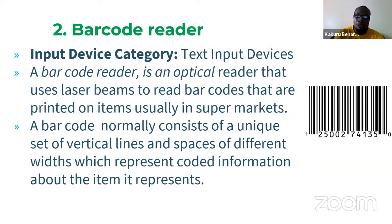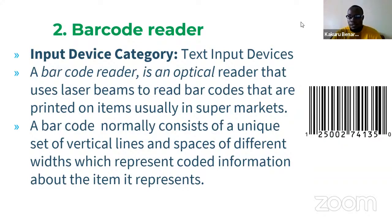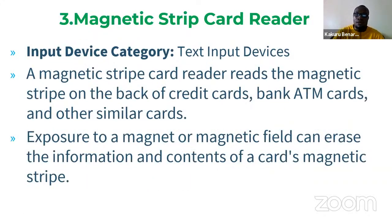A barcode normally consists of a unique set of vertical lines and spaces of different widths, which represent different information about the item. These barcodes are read by the barcode reader. Different heights and widths represent unique information according to how it was designed. Going forward, we need to look at the magnetic strip card reader.